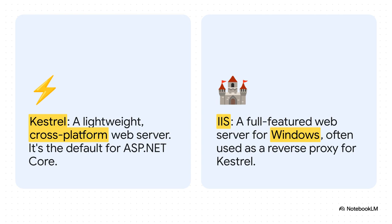In the ASP.NET Core world, you're going to hear two names all the time: Kestrel and IIS. Kestrel is the default web server — it's super lightweight, cross-platform, and incredibly fast. But it doesn't have a ton of features. That's why in a production environment, you'll often see it sitting behind a more heavy-duty server like IIS, which acts as what we call a reverse proxy.